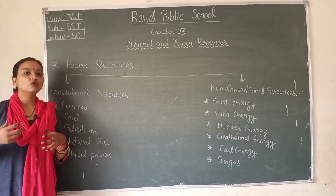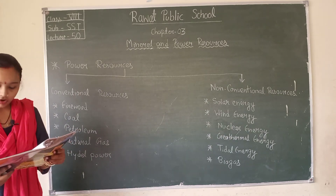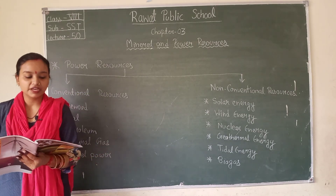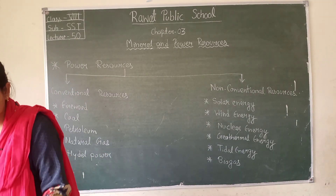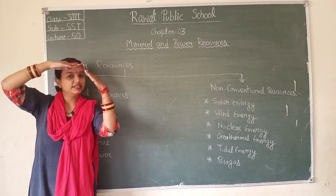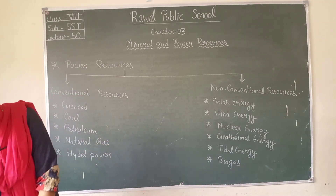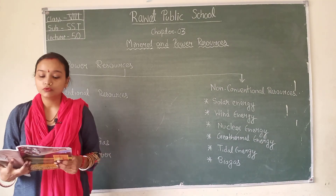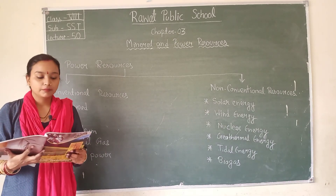Now we will add hydroelectric power. Rain water or river water is stored in a dam and made to fall from heights. The falling water flows through pipes inside the dam over the turbines. The turbine blades are placed at the bottom of the dam. When water flows through the pipes inside the dam over the turbines, the turbines spin and generate energy.